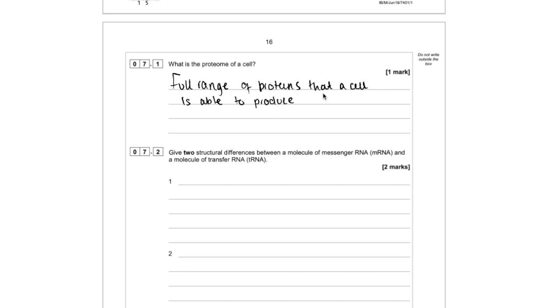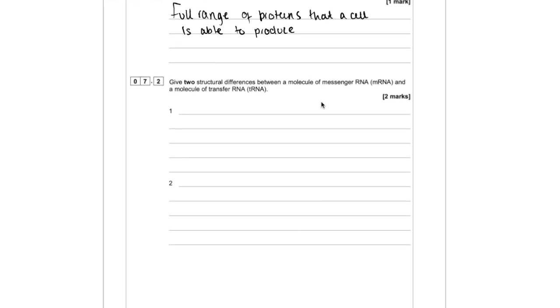The second part is testing your knowledge of the structure of mRNA and tRNA, but you've got to be careful because it's asked you to give the structural differences between the two. Whenever there's a differences question, we have to make sure you're making direct comparisons. Where students usually miss the marks is when they're not stating a clear difference.